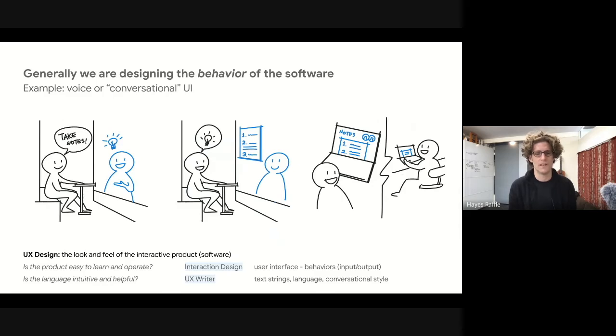So with a conversational UI, you might be asking the question, is the product easy to learn and operate as an interaction designer? And you might even work with a specialist called a UX writer who is just concerned with how the software should speak and how you should speak to the software. UX writers write text strings, they come up with language conventions, and they specify conversational style. So if you're working on the Google Assistant, you might be working with a UX writer. That writer would be helping the team understand how to make language that's intuitive and helpful.